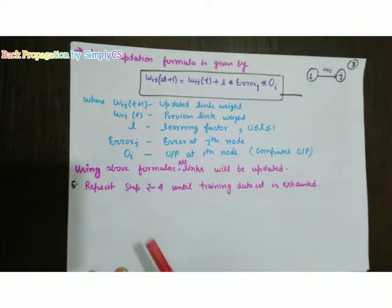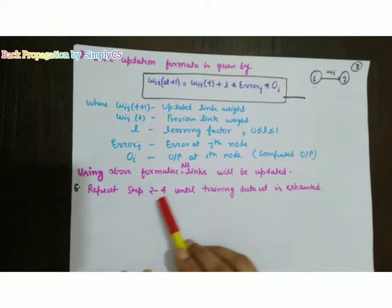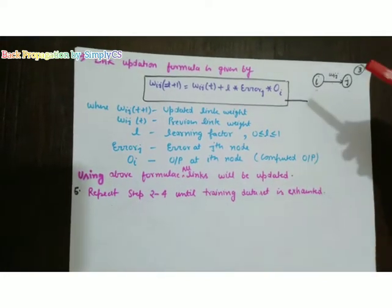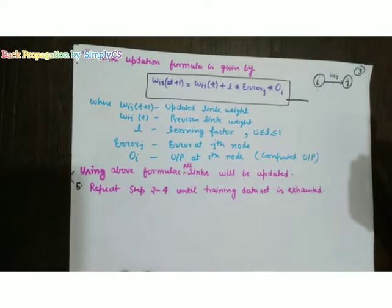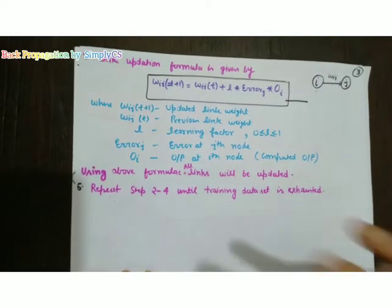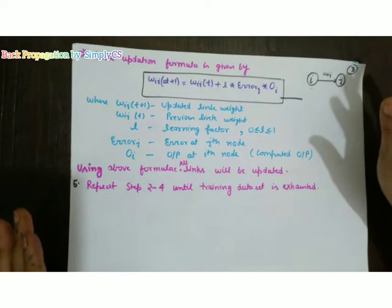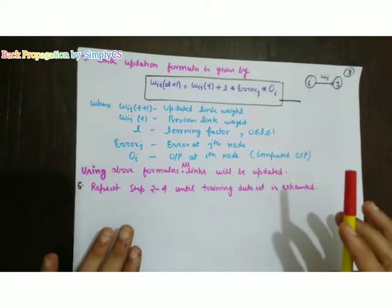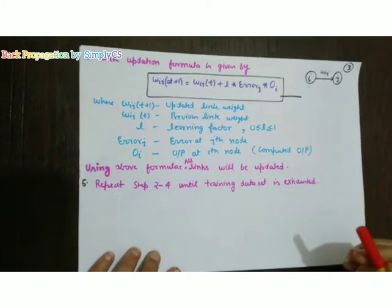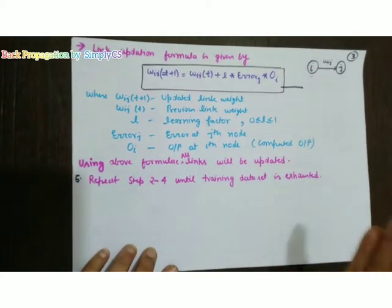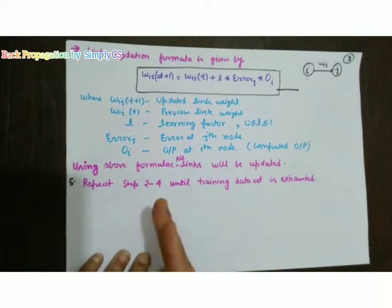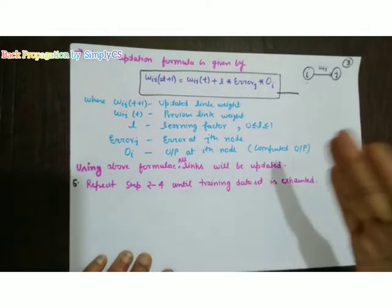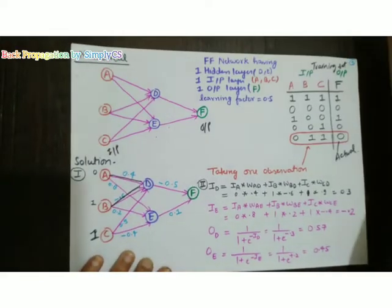Step 5: repeat steps 2 to 4 until all the training set is exhausted. That means we pick the next observation and apply the same steps 2 to 4 to update the links. Overview: calculate output first; if the actual output varies, calculate the error, propagate backward, and update the link weights.